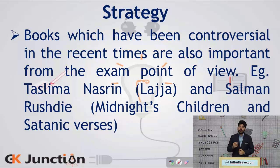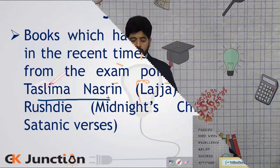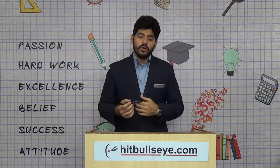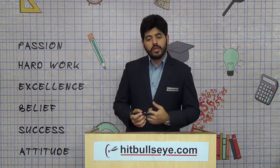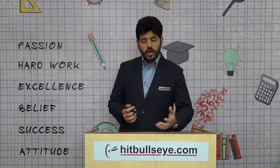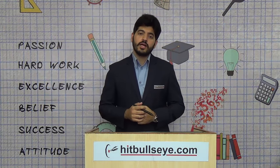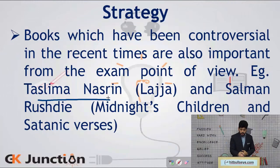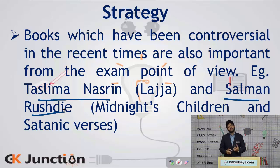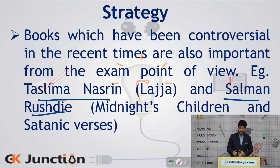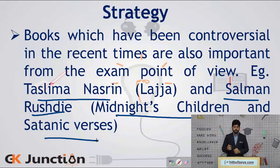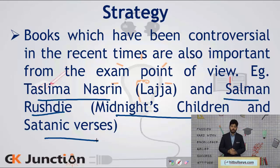For example, author Taslima Nasreen — a Bangladeshi author who has been in news because of her critical writings — so her writings have become very important. Also Salman Rushdie, who has written certain texts which have not been taken in good humor by certain sections of the population. His books 'Midnight's Children' and 'Satanic Verses' have been again very questionable. Such authors and their books are again very important.